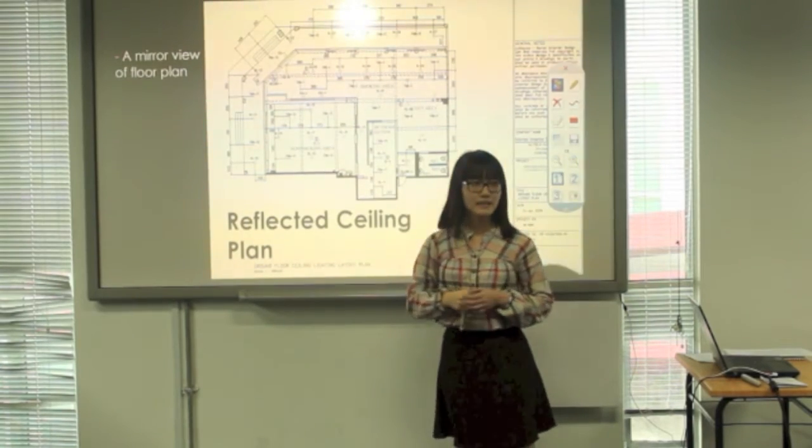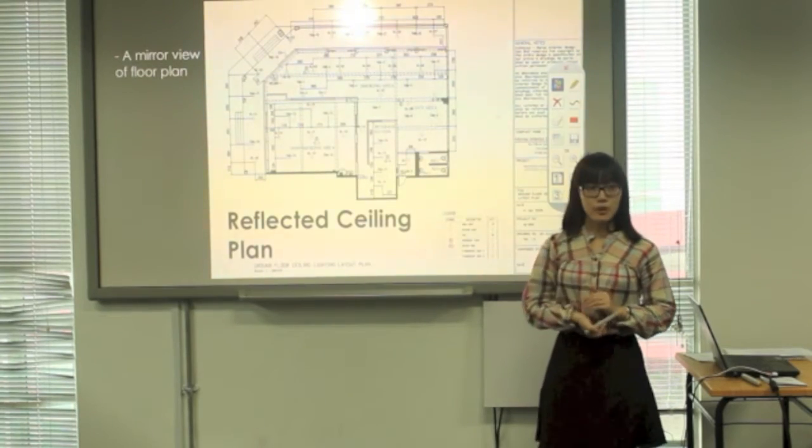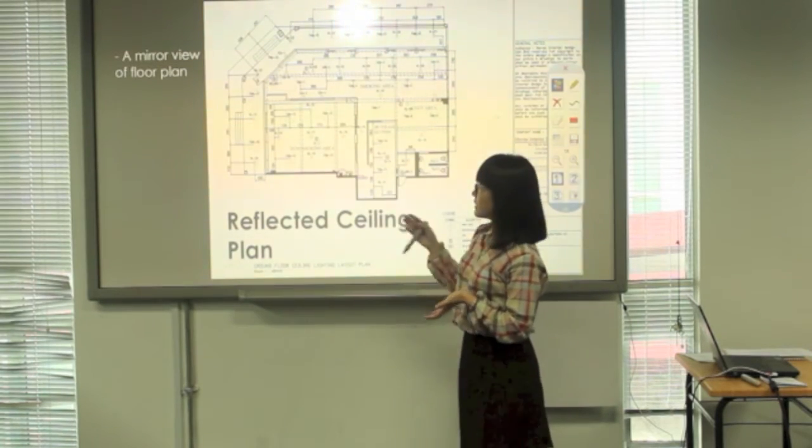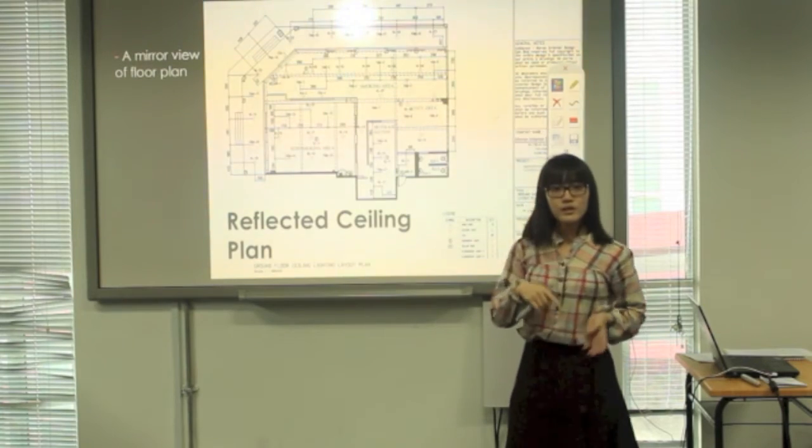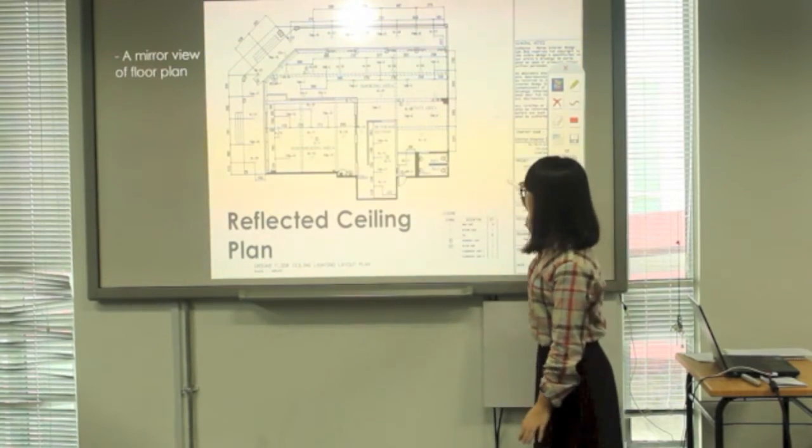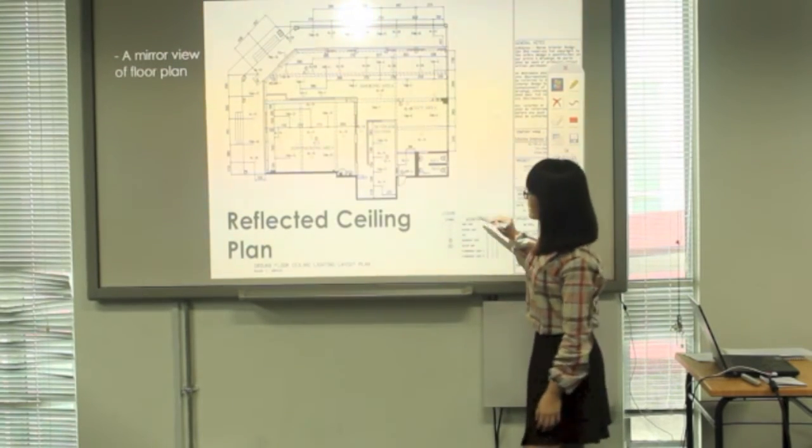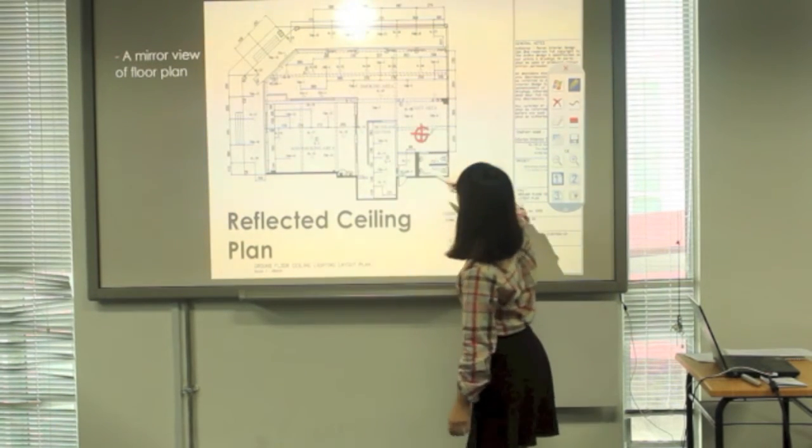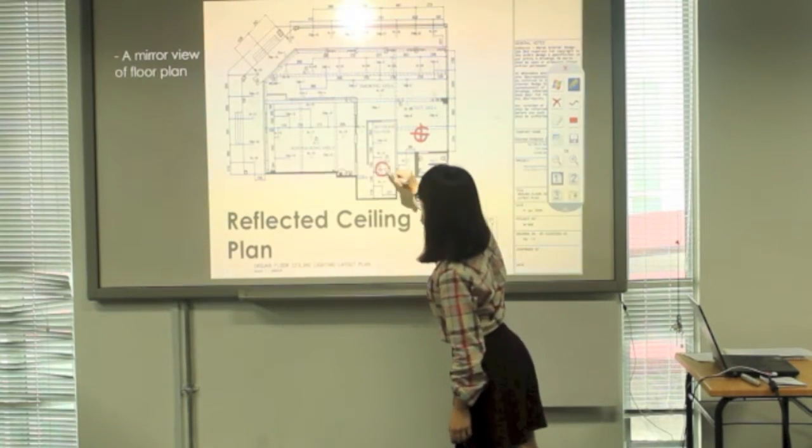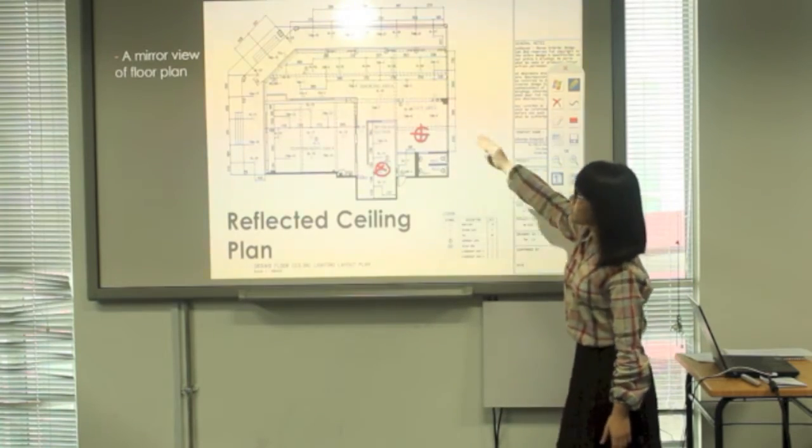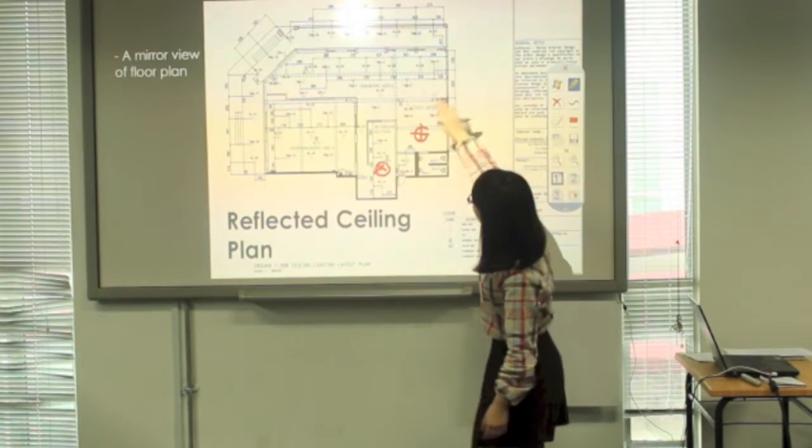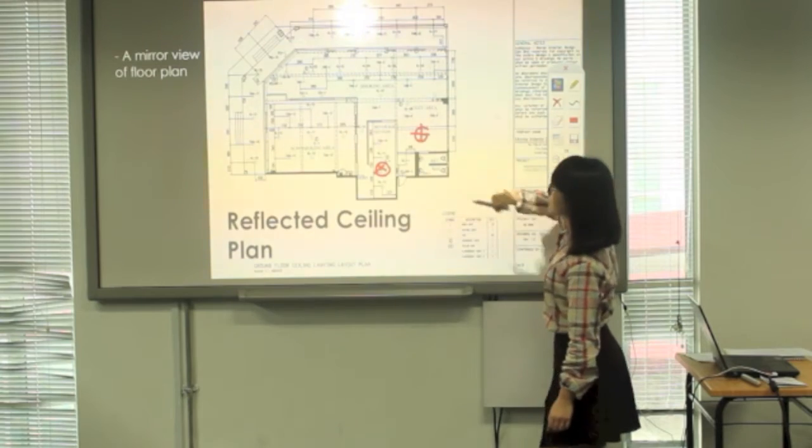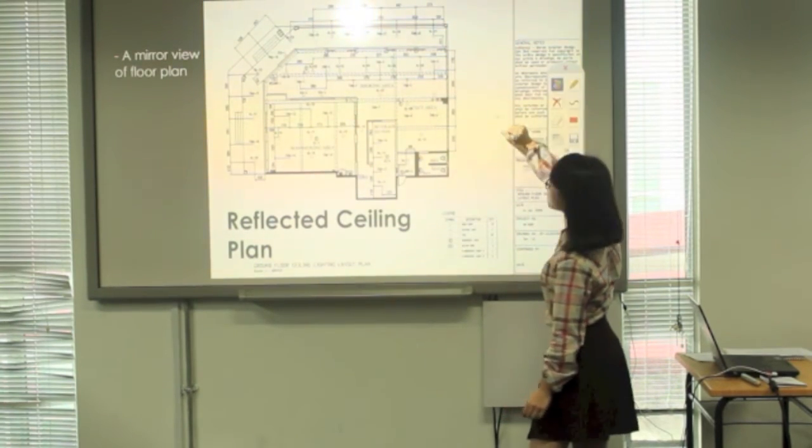Moving on, we have a reflected ceiling plan. A reflected ceiling plan is a mirror view of a floor plan. It is actually something like a floor plan, but the difference is this reflected ceiling plan is a plan without the doors, windows, and it only includes the lighting on the ceiling. For example, the hang lights. Here, the hang lights, you can see. And then there are downlights, this symbol. It is all in this space.